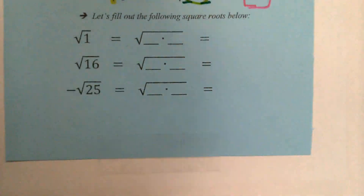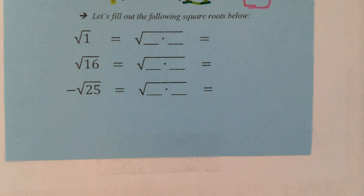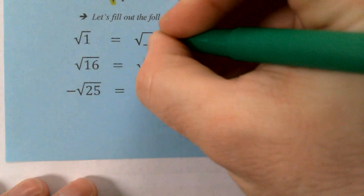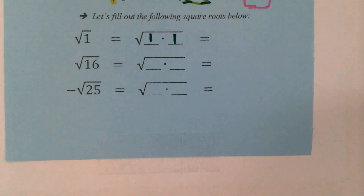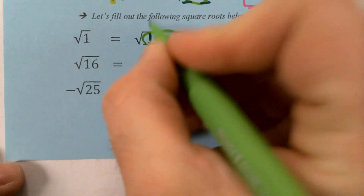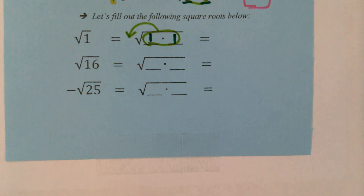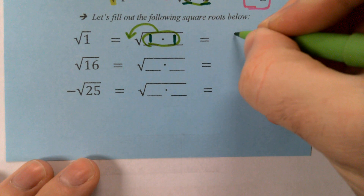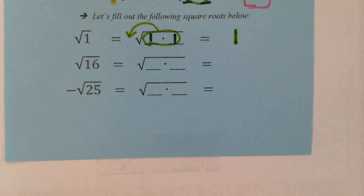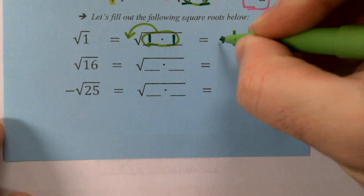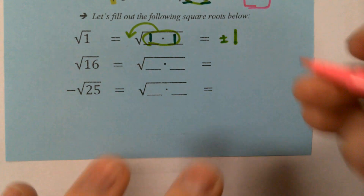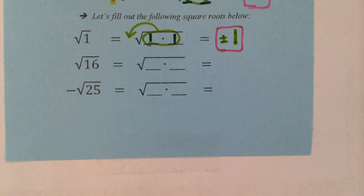Let's go ahead and do some examples — breaking up these square roots and doing the inverse of squaring a number. The first one: square root of 1. Who can tell me what two numbers multiply together to produce 1? 1 and 1 — exactly right. We have identical factors, so we bring those 1s out in front and they combine to create a single 1. Is our answer going to be positive 1, or something different? Plus or minus 1 is our answer for the square root of 1.